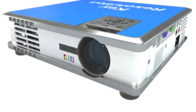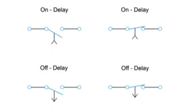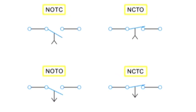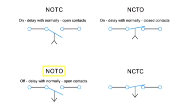Let's look at four basic types of relays. There are two types of relay functions — on-delay and off-delay — each with two types of contacts: normally open and normally closed, represented here by four symbols. NOTC functions as an on-delay with normally open contacts. NCTO operates as an on-delay with normally closed contacts. NOTO functions as an off-delay with normally open contacts. And NCTC operates as an off-delay with normally closed contacts.